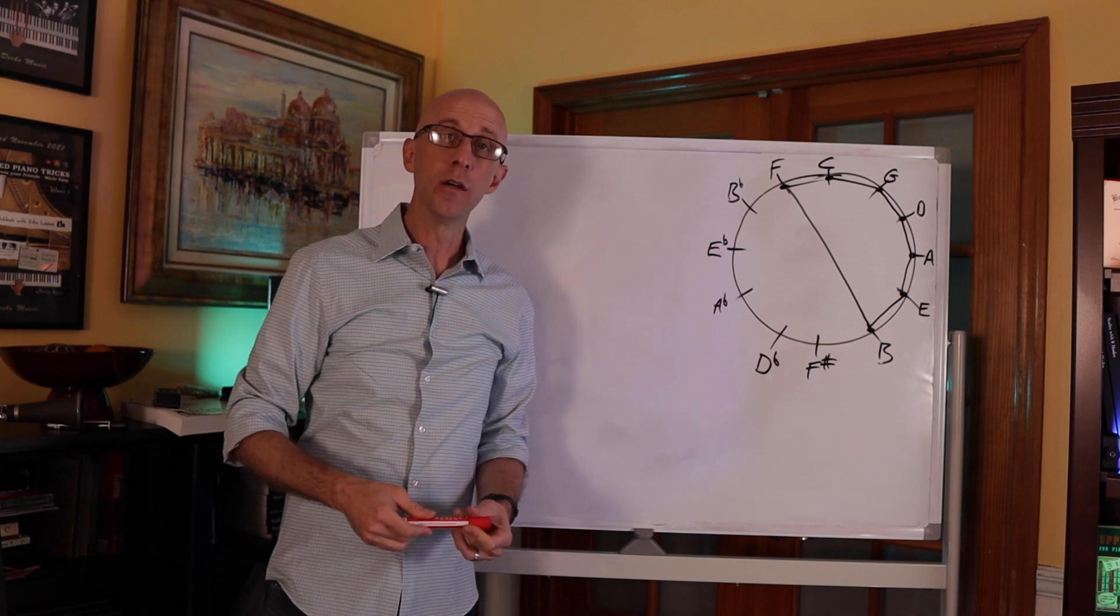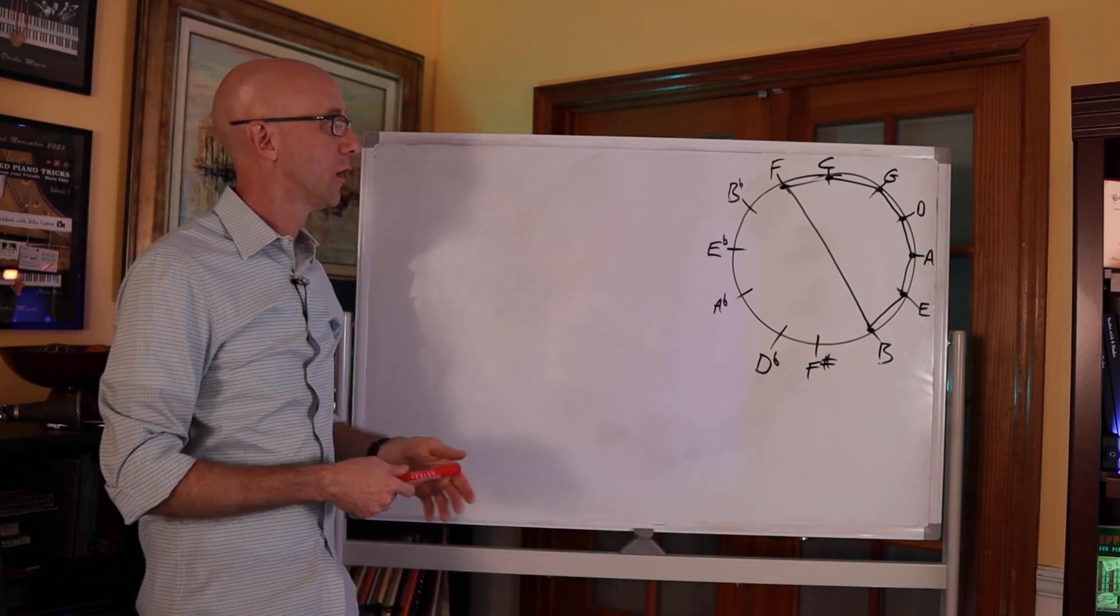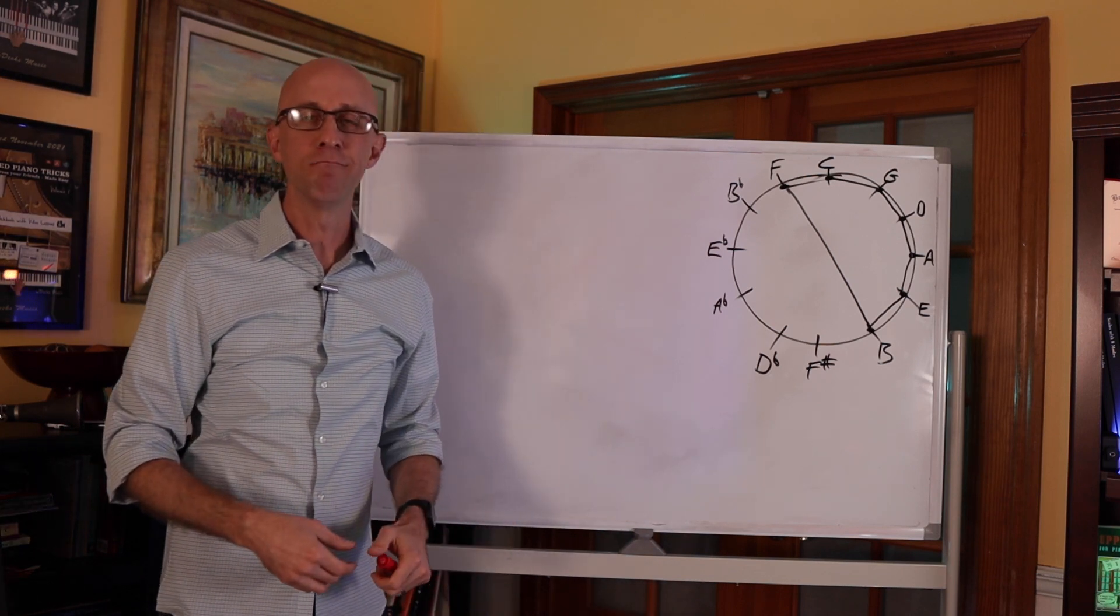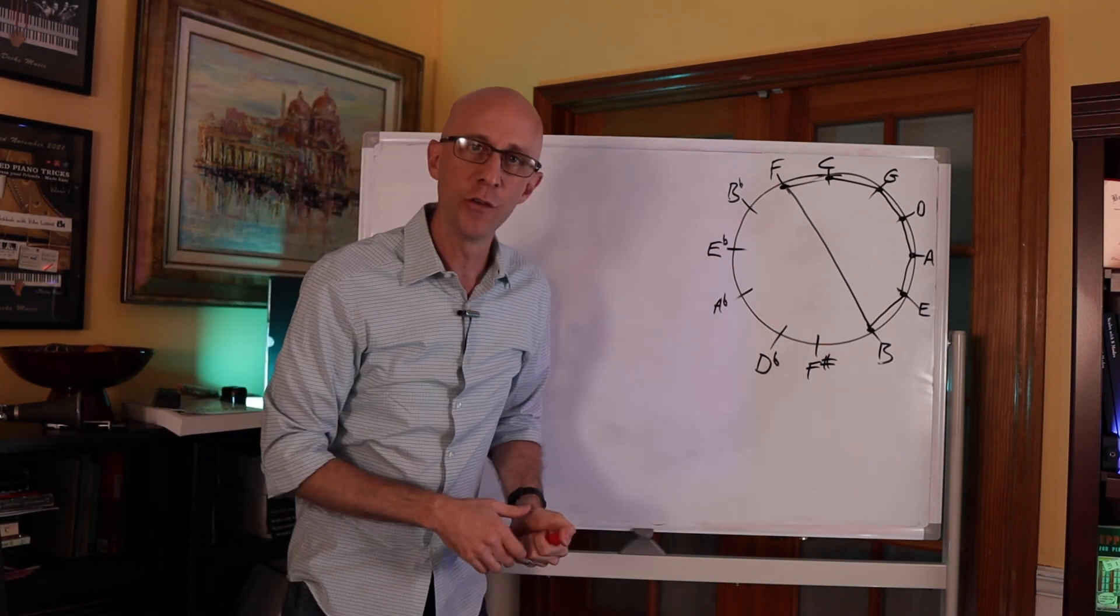Now that you understand how graphing scales onto the circle of fifths works, let's take the next step. That's going to be the first step into understanding our proof for how we got to 2048.